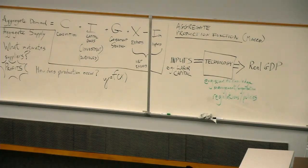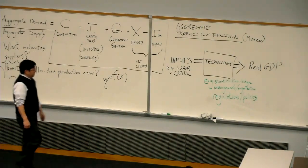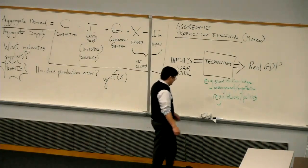This fairly simple metaphor is going to give us some fairly powerful implications to help us think about our big problems: why economic growth occurs and why the business cycle occurs.